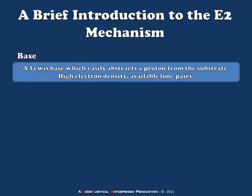I'm going to start by defining a few things. First is a base. When I say base during this lecture, I'm talking about a Lewis base, which has lone pair electrons it can donate to form a new bond. Now, it can act as a Brønsted-Lowry base, extracting a proton by doing so. So we're going to watch for that as we go through our E2 reaction.